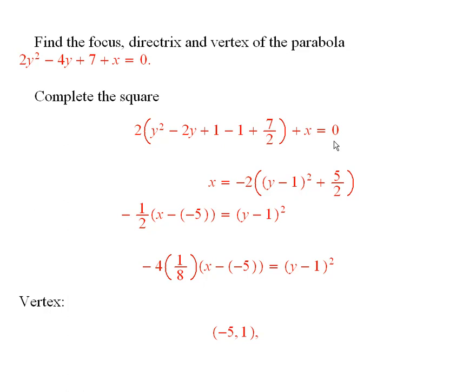Now, take this stuff over to the other side, and then we have x equals negative 2 times all of this. Okay? So, then we'll divide both sides by negative 2.